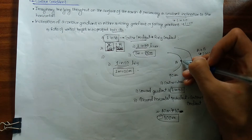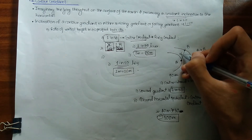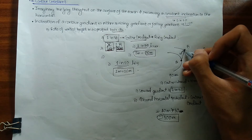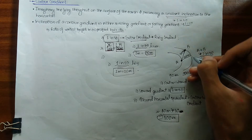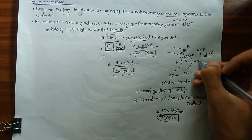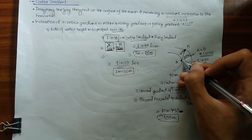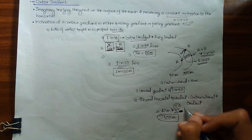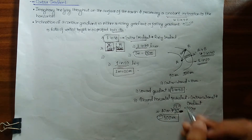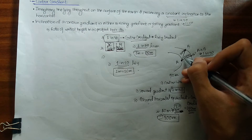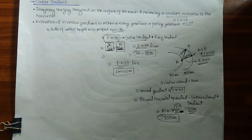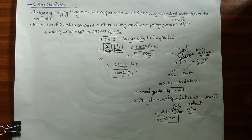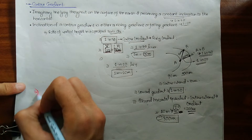To draw the contour gradient of 1 in 30, I need to draw the line such that it has a length of 300 meters. If instead I drew a line with a length of 200 meters — which I'll name B-dash — that corresponds to a contour gradient of 1 in 20, since 10 multiplied by 20 gives a ground horizontal equivalent of 200 meters. This is how you draw contour gradients between two contour lines.